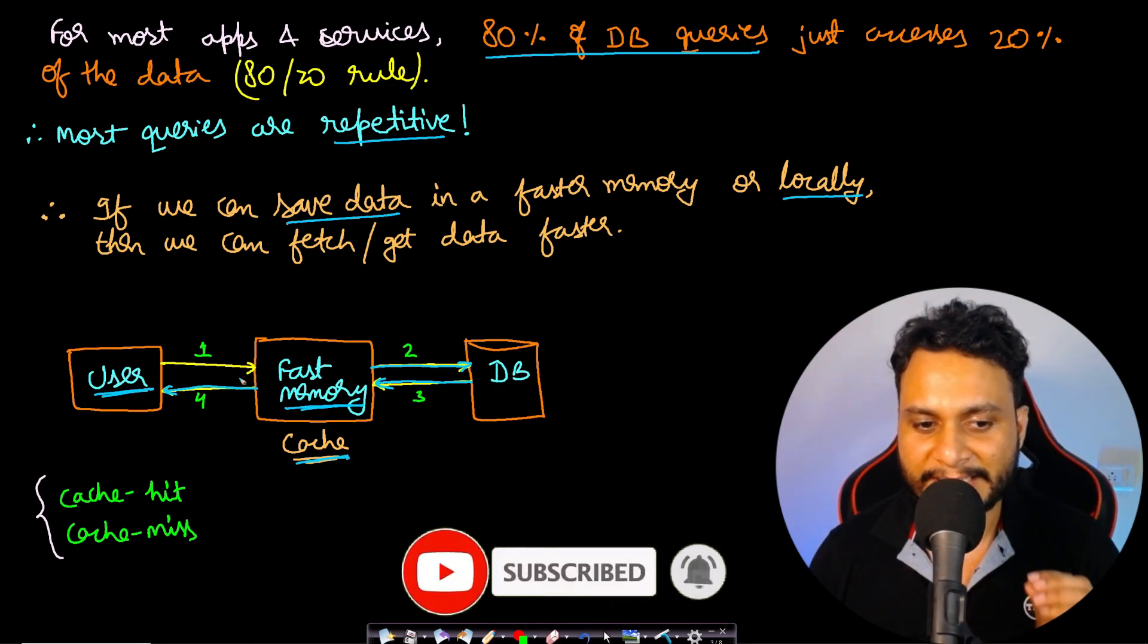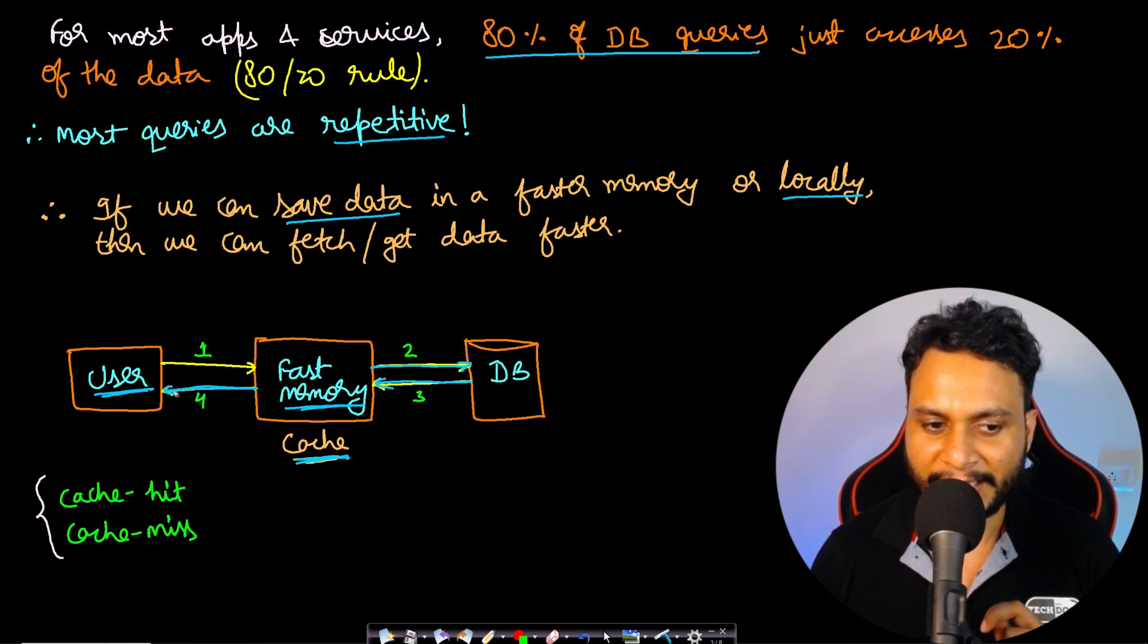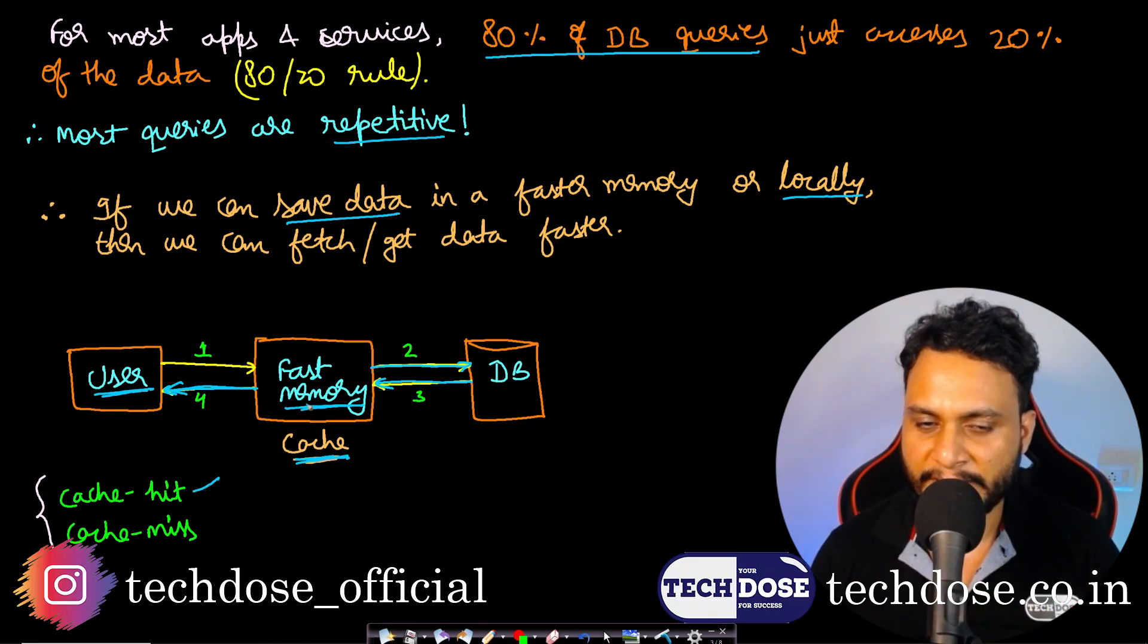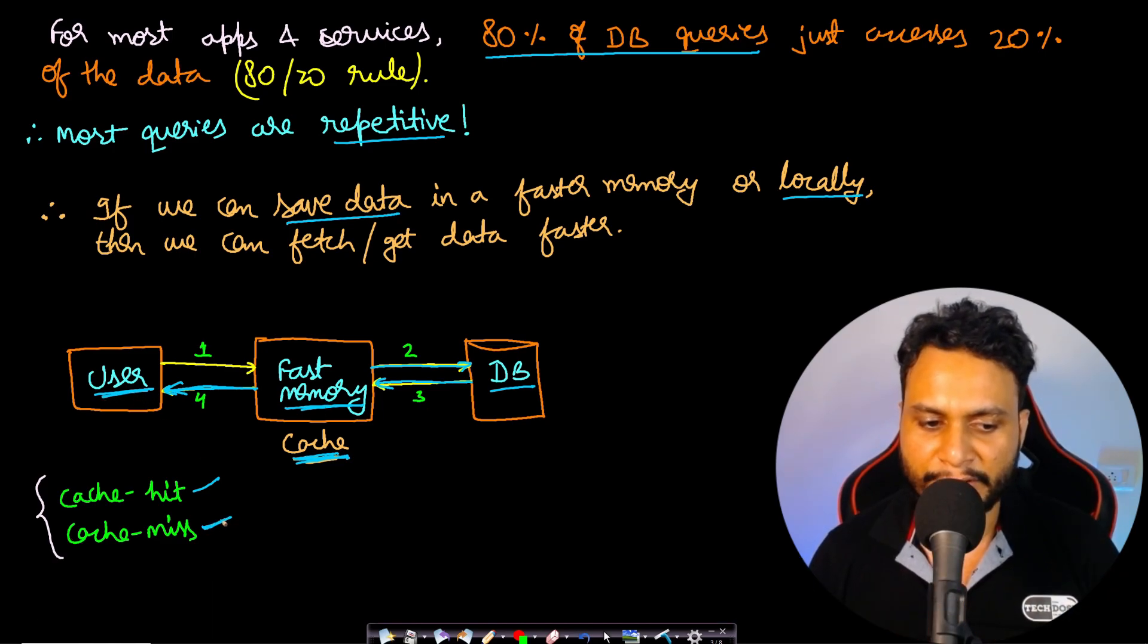In the case when the user is asking for data and the cache actually has that data and directly reverts back with the data rather than going to the database, that is called cache hit. Otherwise, if the user is asking for data and the cache doesn't have that data, so the cache has to ask from the DB, read from the DB, get it, and then return back to the user, that scenario is called cache miss.